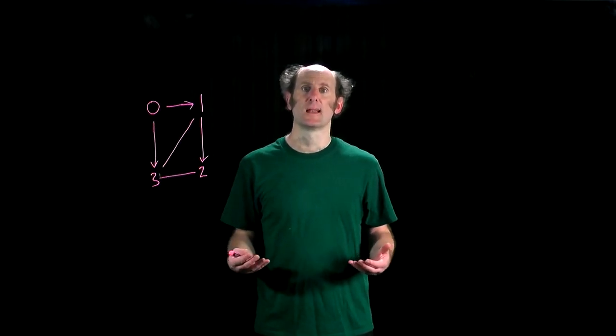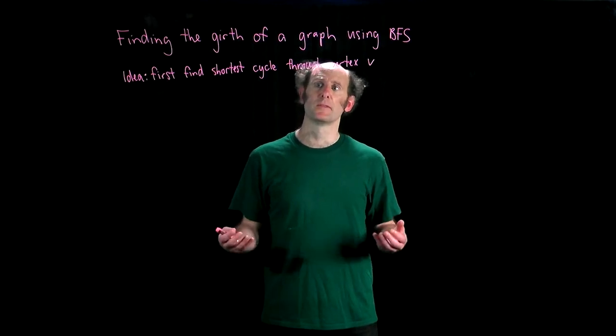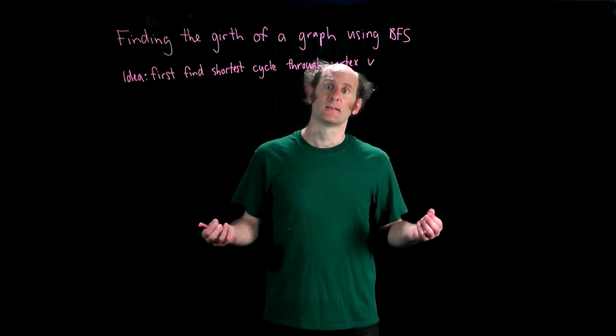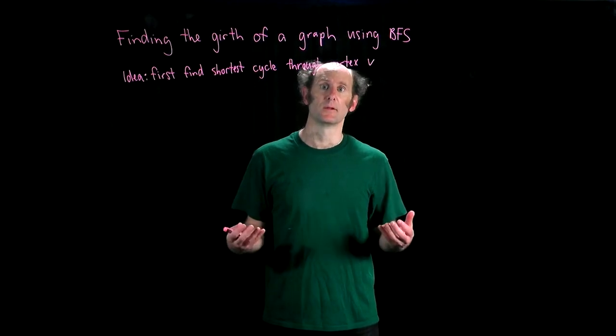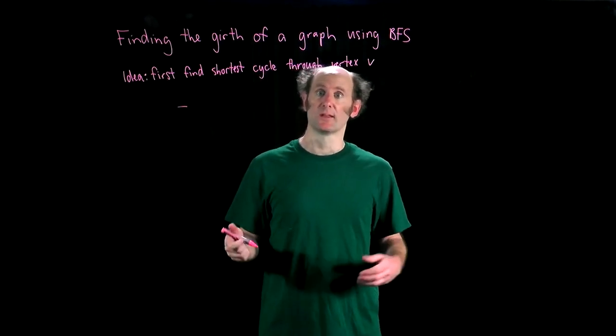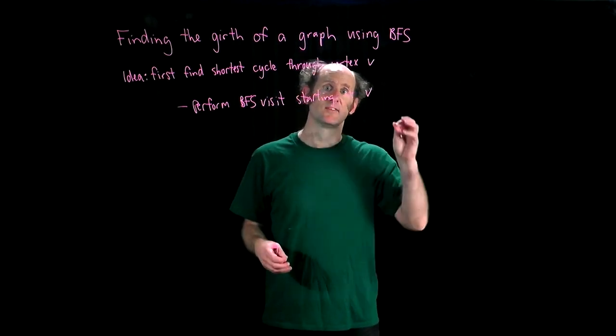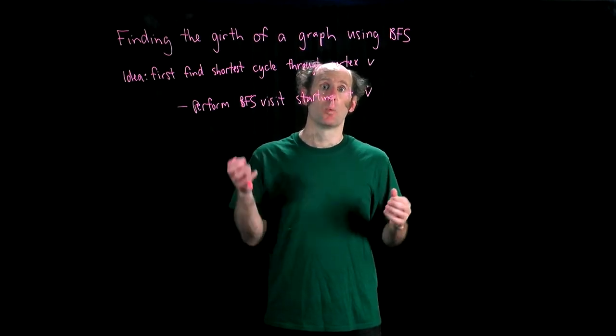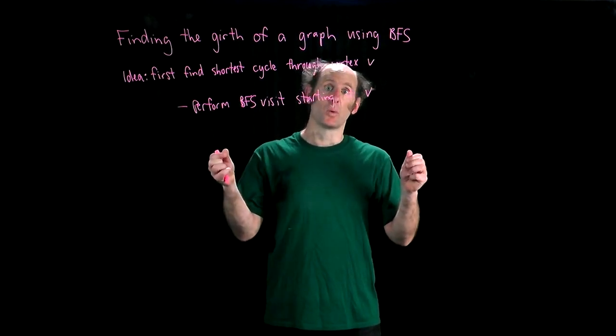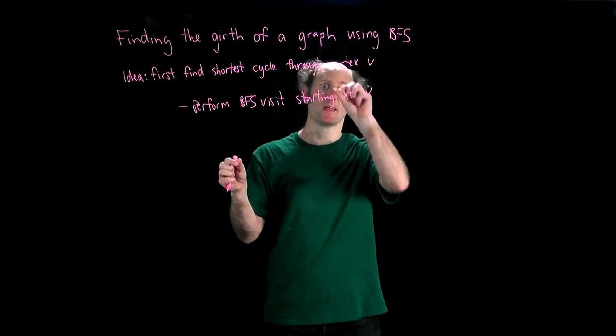Let's formalize this and write it out as an algorithm. For finding the girth of a graph using BFS, the idea is that we'll first find the shortest cycle through vertex v, and then we'll loop over all vertices and take the shortest cycle we find in the entire graph, and that'll be the girth. So let's perform BFS visit starting at vertex v. When we're performing that visit, if the current vertex is x and we meet a gray neighbor y—that is, we're at x and we cross the edge x-y to find vertex y that is also gray—then the walk from v to x to y and back to v is a cycle.